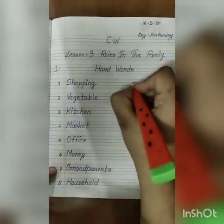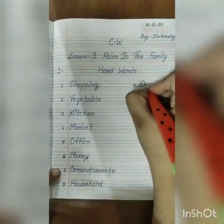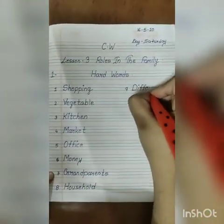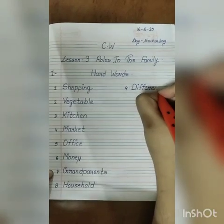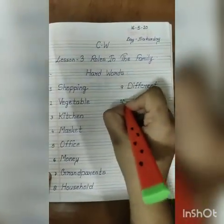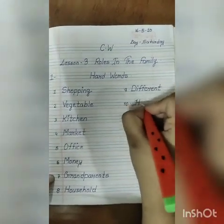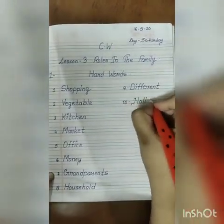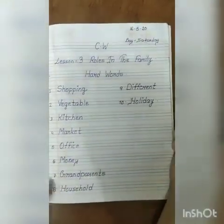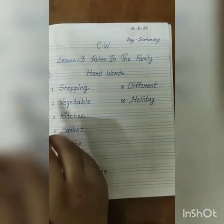Number nine: different — D-I-F-F-E-R-E-N-T. Number ten: holiday — H-O-L-I-D-A-Y. These are your ten hard words that you have to learn.